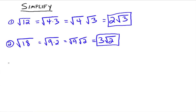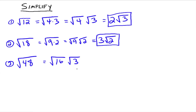Let's do one more: the square root of 48. The largest perfect square that divides into 48 is 16, and 16 times 3 is 48. So the square root of 48 is the same thing as the square root of 16 times the square root of 3, which gives us 4 times the square root of 3. You can include the intermediate step or jump straight to separating the roots — either way works.